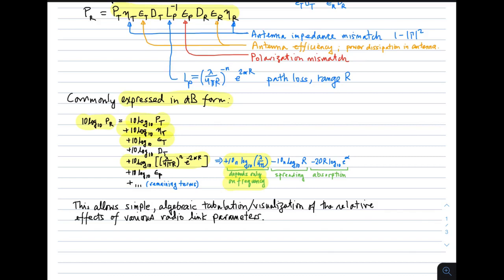The next term is minus 10n log10 of r, accounting for spreading. If n is 2, we get 20 log10 r, which would be free space; for higher values of n we get different leading factors. The third factor is for absorption. By expressing path loss in dB, we can see individual physical contributions as separate terms in the sum. This approach allows simple algebraic tabulation and visualization of the relative effects of various radio link parameters — super useful for radio link planning, because now you can see what you have to do in terms of individual contributions to achieve a required receive power.